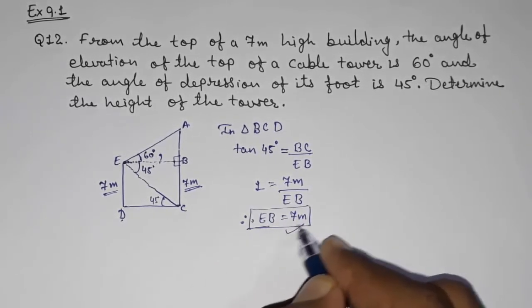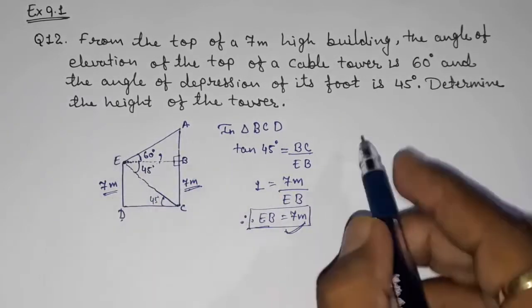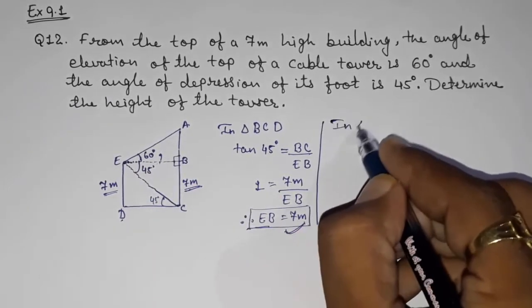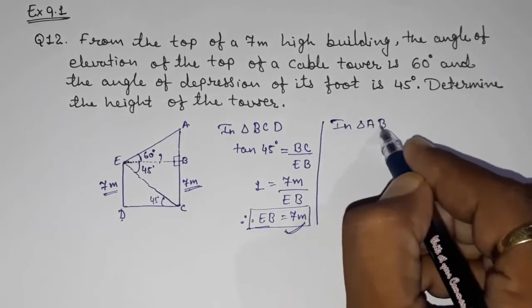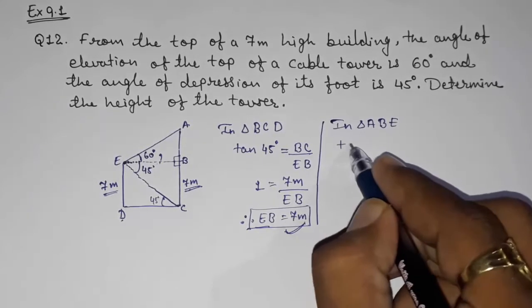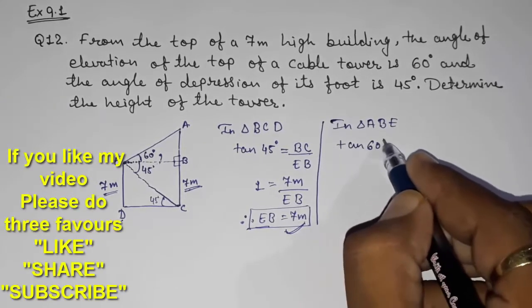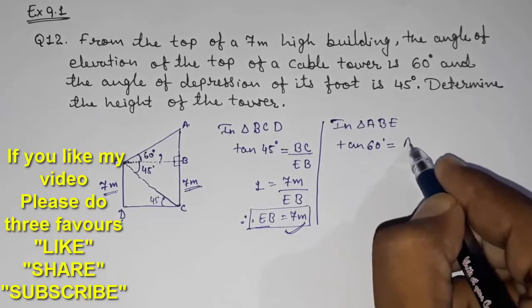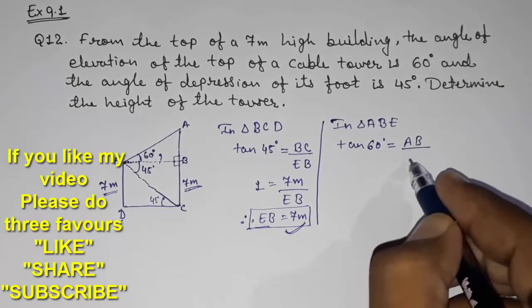Now we are going to use this result in this triangle, in triangle ABE. Again the same thing. Now we got EB that is 7 meters. So tan 60 degrees, that is equals to AB upon EB.